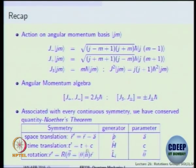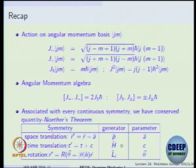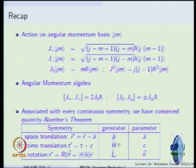So you see this neat table for the simple continuous symmetries, and these generators are the conserved quantities. The time derivative of the momentum operator in the Heisenberg picture will always be zero, or equivalently the Hamiltonian for a system which possesses translation symmetry should commute with the generator by Heisenberg's evolution equation. So everything falls in place.